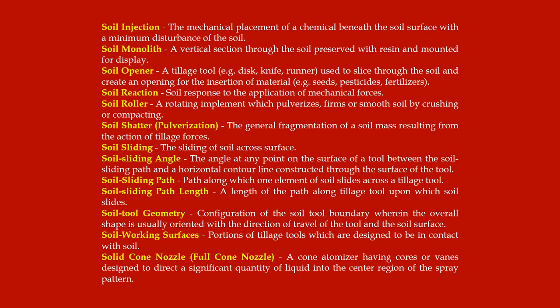Soil heaving: the lifting or swelling of soil resulting from natural forces such as freezing. Soil injection: the mechanical placement of a chemical beneath the soil surface with a minimum disturbance of the soil. Soil monolith: a vertical section through the soil preserved with resin and mounted for display. Soil opener: a tillage tool — disc, knife, or runner — used to slice through the soil and create an opening for the insertion of seeds.